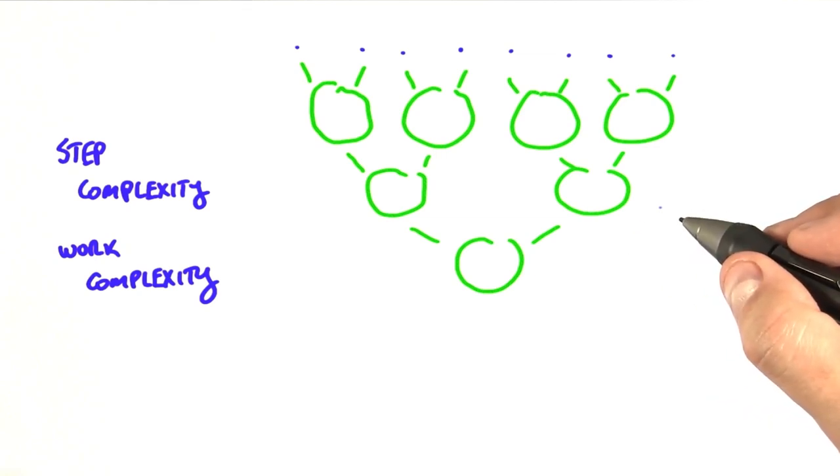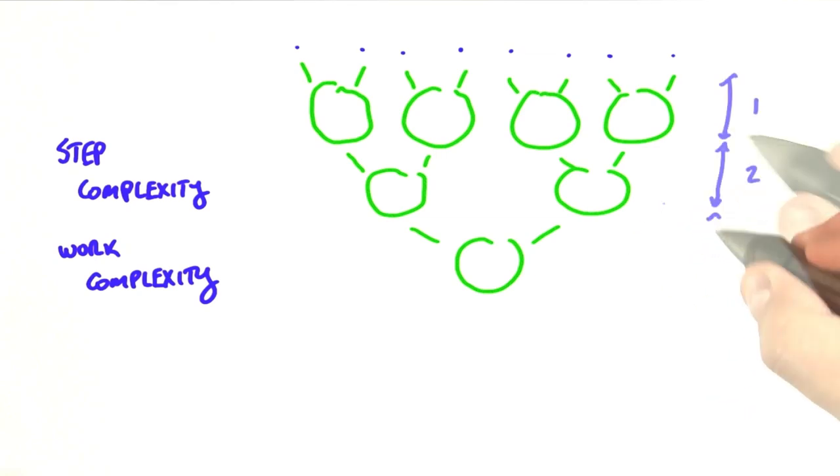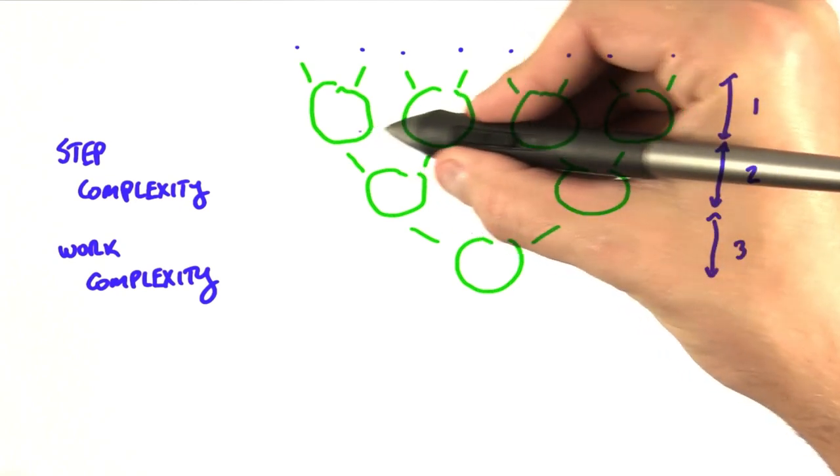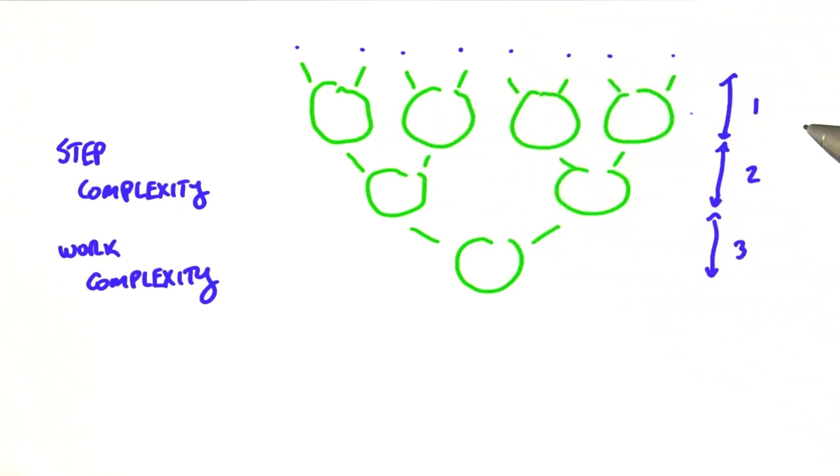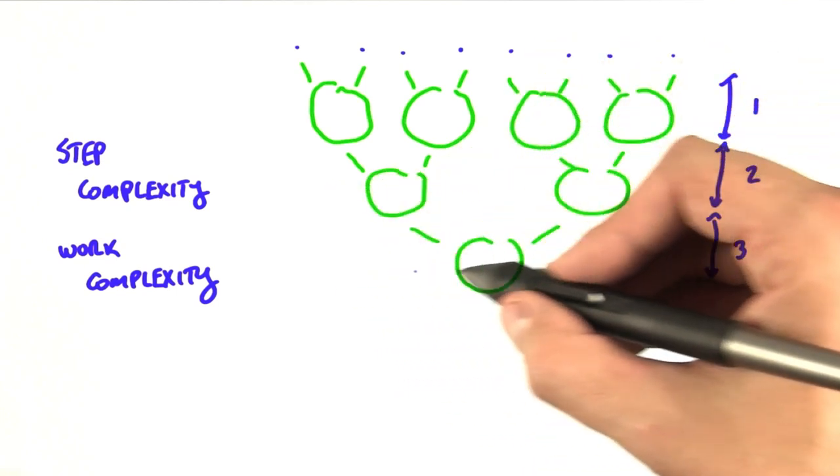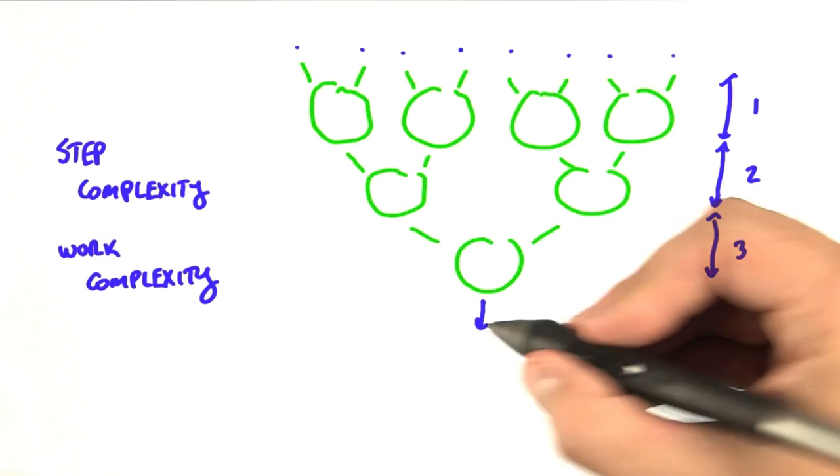So first we're going to look at the number of steps. We see that it's going to take us three steps to finish. This first step here will do four operations. The second step can be done in parallel with two operations, and then the third step is a final operation to get a final result.